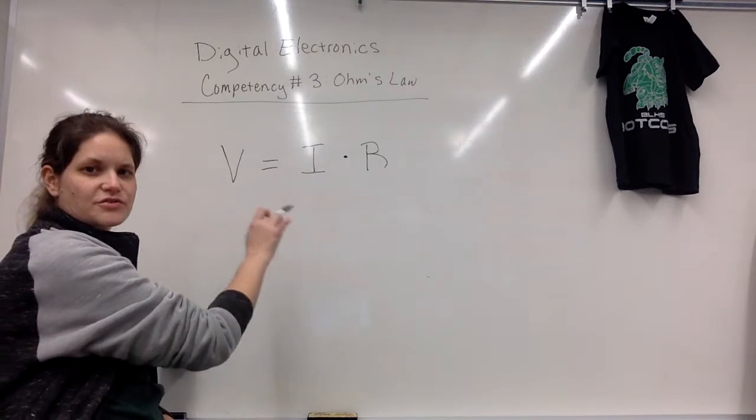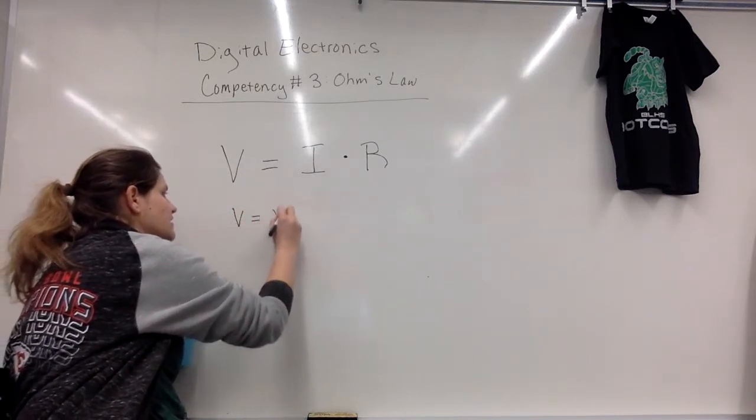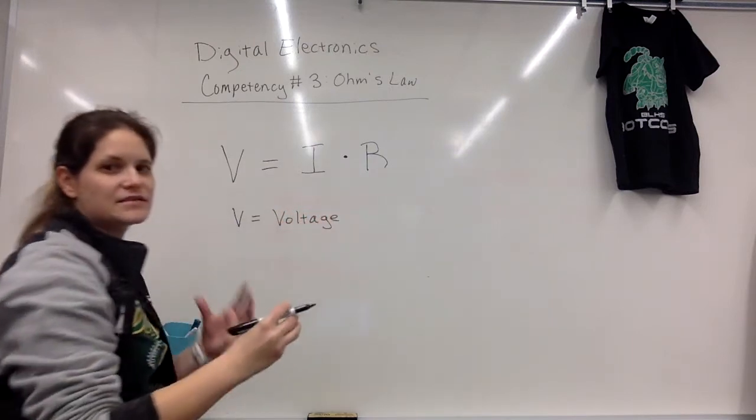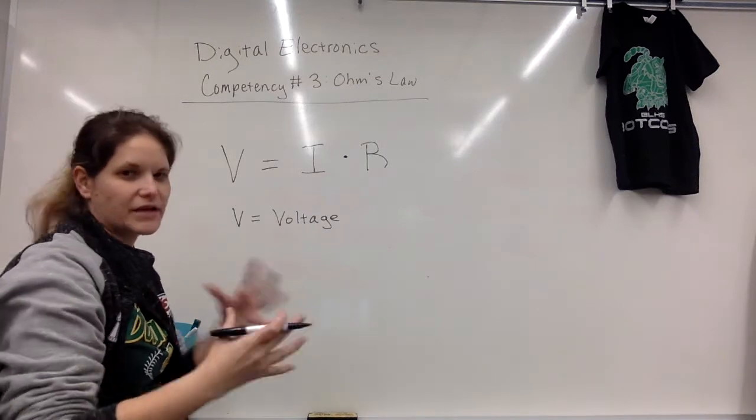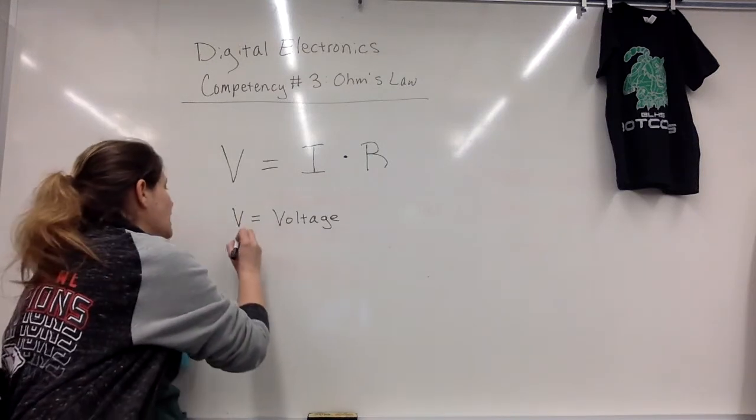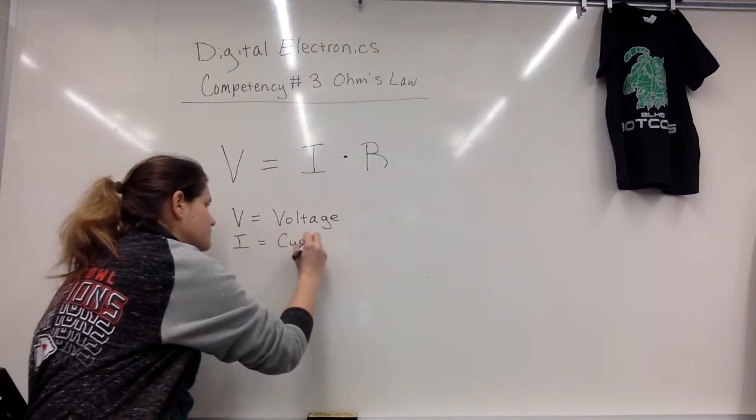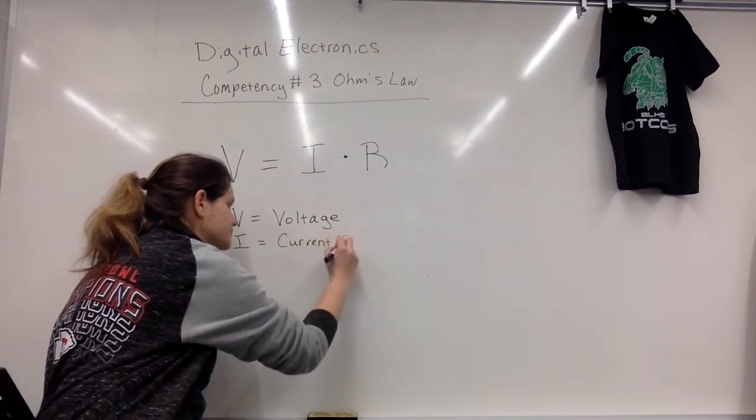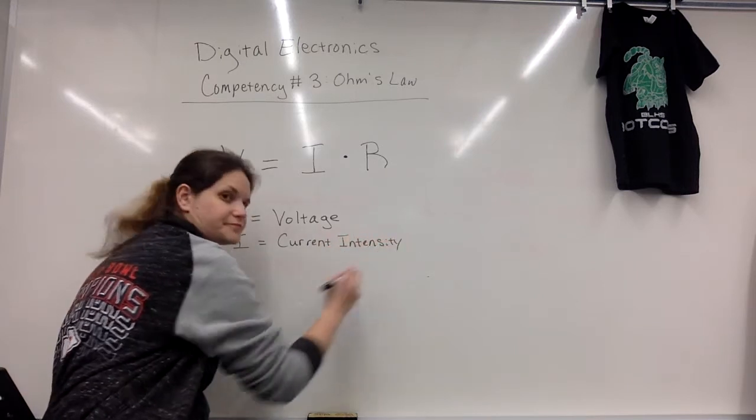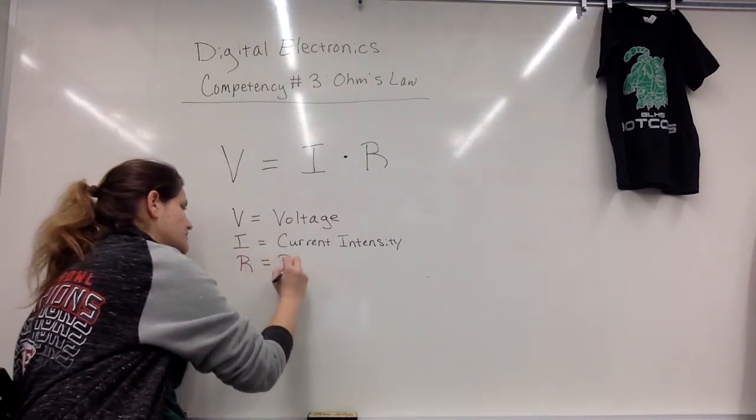Let's make sure to note what these different terms mean. So V, that stands for voltage, which really is electric potential energy. The I, that stands for current intensity. The R stands for resistance, basically the amount of resistance in our resistors.